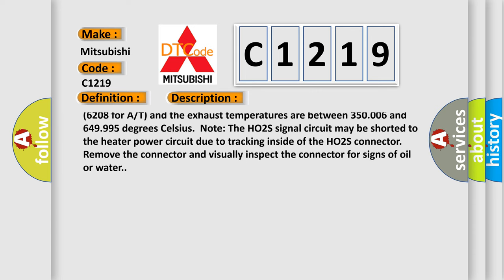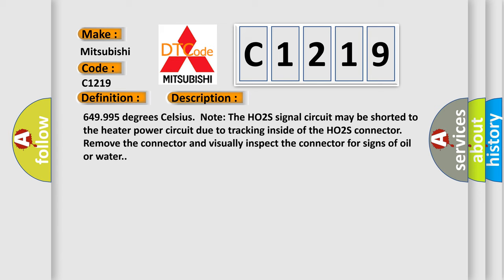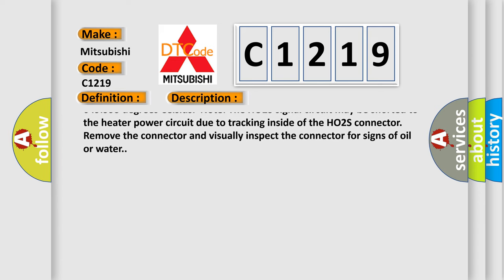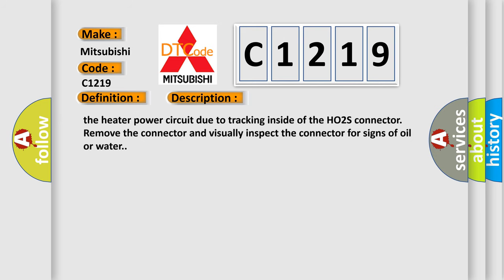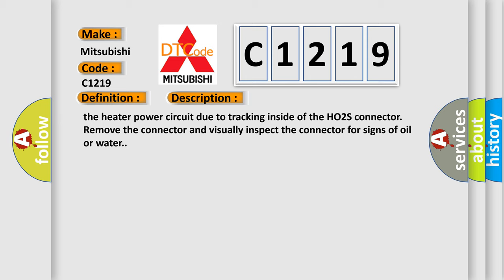The engine speed is less than 7,008 revolutions per minute, 6,208 for V8, and the exhaust temperatures are between 350,006 and 649,995 degrees Celsius. Note, the HO2S signal circuit may be shorted to the heater power circuit due to tracking inside of the HO2S connector. Remove the connector and visually inspect the connector for signs of oil or water.